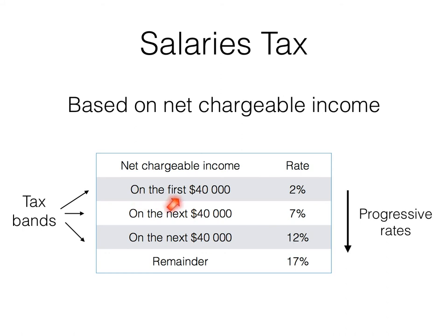For example, on the first forty thousand dollars the tax rate is two percent — that means if your net chargeable income is forty thousand dollars, you multiply this number by two percent to find the salary tax of this part. On the next forty thousand dollars, remember this is the next forty thousand dollars, the rate will be higher, which is seven percent. For the next forty thousand dollars the rate is twelve percent, and for the remainder the rate will be seventeen percent.